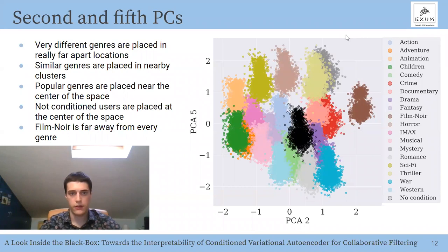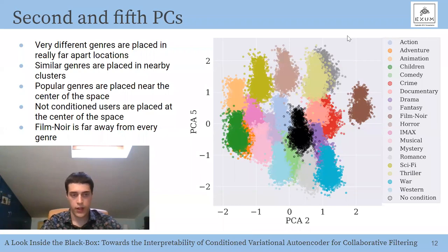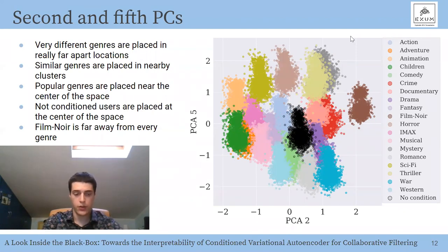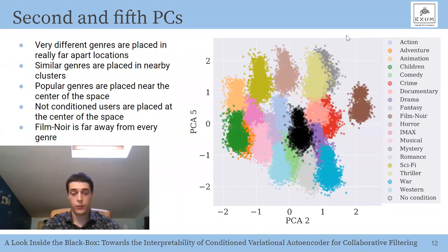In the plot of the 2nd and 5th principal components, very different genres are placed far apart while similar genres cluster together. For example, Horror is far from Children and Animation but near Drama and Romance. Popular genres such as Action, Comedy, Drama, and Romance are placed near the center, and non-conditioned users are also at the center — which is reasonable, since without conditioning the most popular genres become more likely. Film Noir is placed far from all other genres, but the model placed it nearest to Crime, Drama, Thriller, and Mystery, which is a coherent grouping.